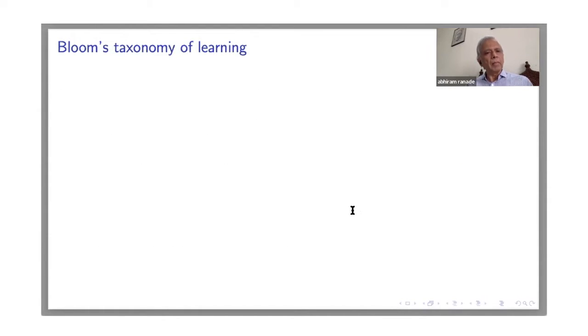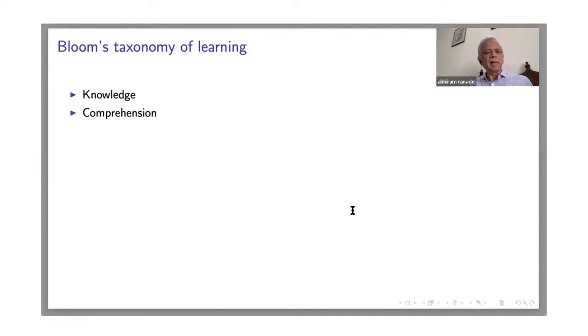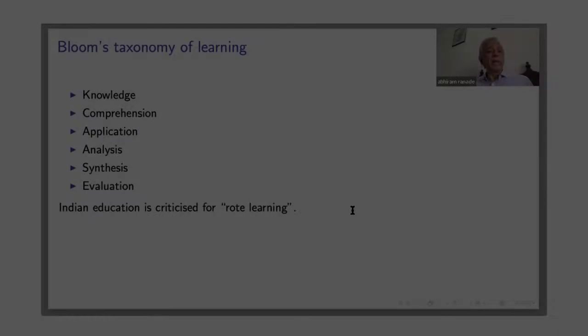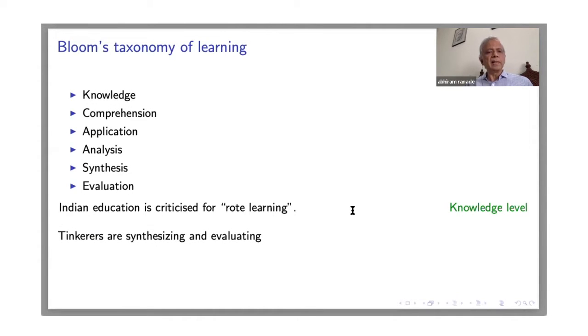Learning has various levels, starting from the most obvious or rote learning, which is called knowledge, comprehension, application, analysis, synthesis, and evaluation. Many kinds of education is criticized for rote learning, imparting knowledge. Tinkerers are actually synthesizing and evaluating. So they are really at the highest level of this learning taxonomy.